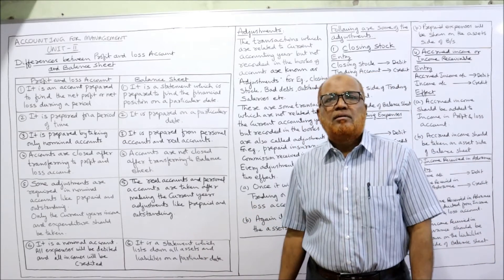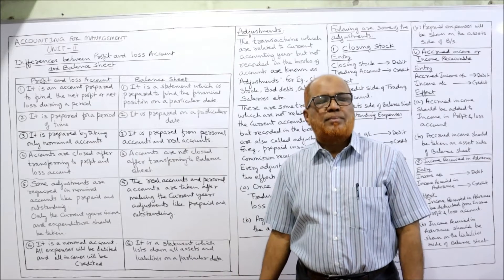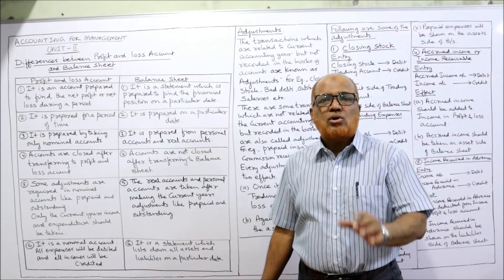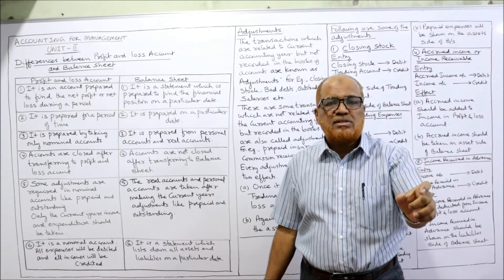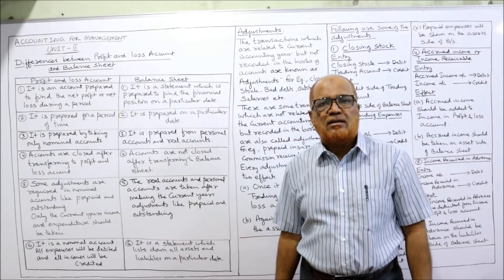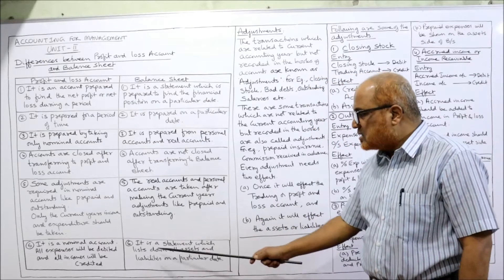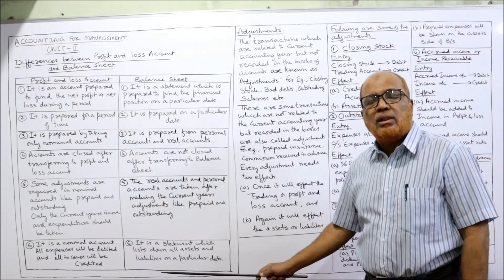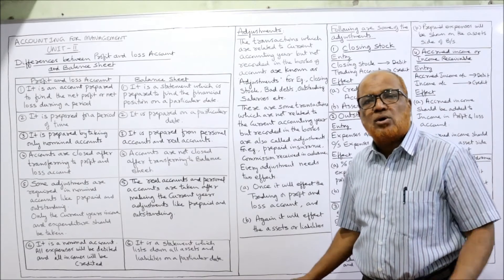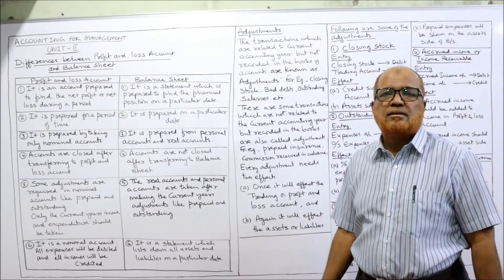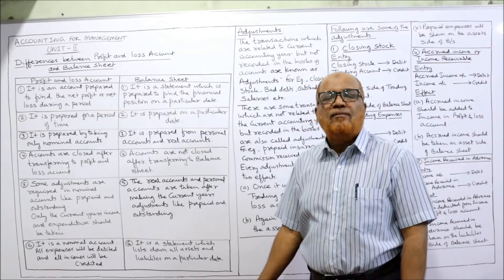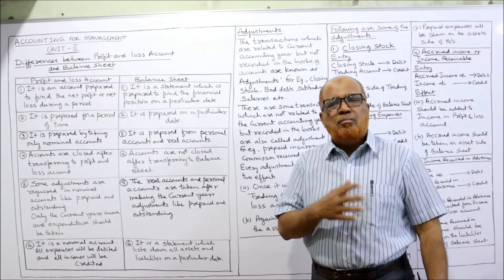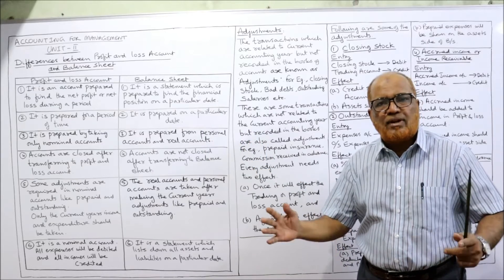Lastly, the profit and loss account is itself a nominal account — all expenses are debited and all incomes are credited. Whereas the balance sheet is a statement, not an account — it lists all assets and liabilities on a particular date. These are the key differences between profit and loss account and balance sheet, which are frequently asked as theory questions in examinations.